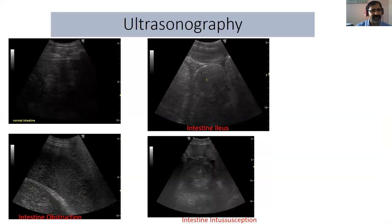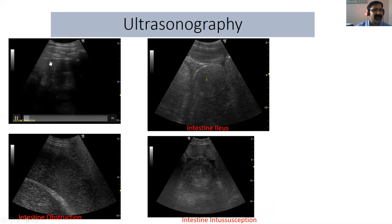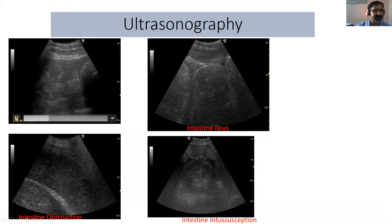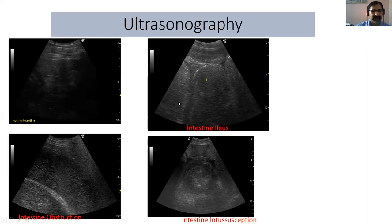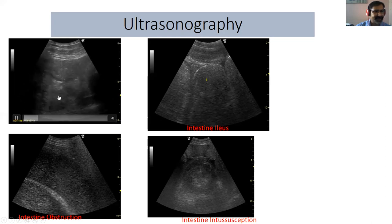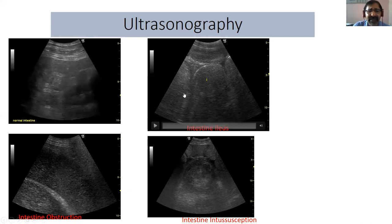Since the intestine is a soft tissue structure, ultrasound is the best tool for diagnosis of intestinal affection. Before going to the abnormality, let's see how the normal intestine looks on the monitor during ultrasonography. In a normal intestine, you will find ingesta flowing here and there, and the intestinal lumen diameter is varying — showing contraction and expansion — indicating normal peristaltic movement in the intestine.